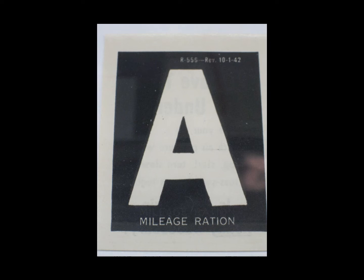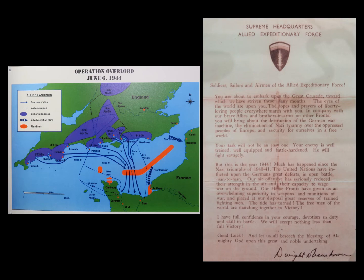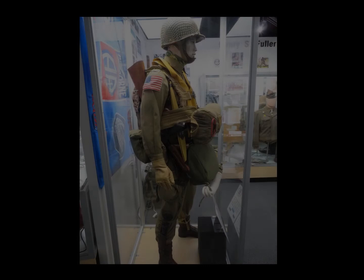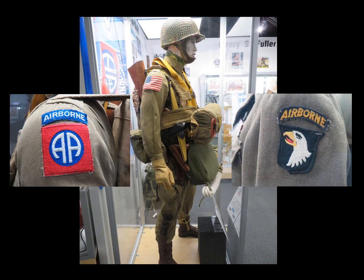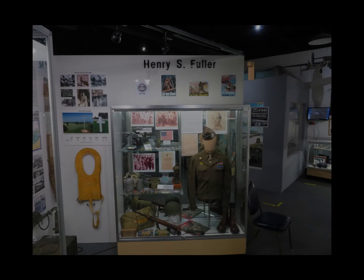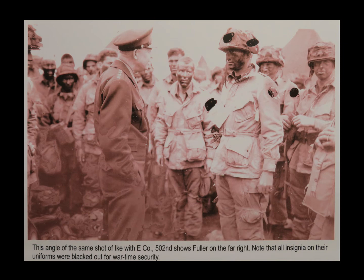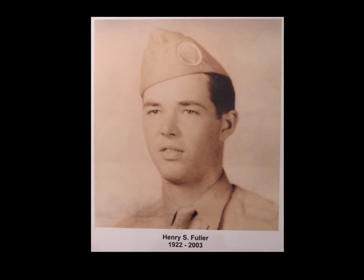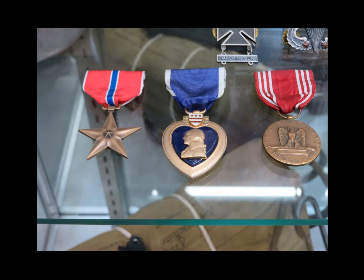On June 6, 1944, Allied forces went ashore on the beaches of Normandy. The night before the D-Day landings, Allied airborne forces from the American 82nd and 101st Airborne Divisions and the British 6th Airborne Division parachuted into the Normandy area to hold key road junctions in preparation for the invasion. One of the young paratroopers that jumped into Normandy that night with the 101st Airborne Division was Henry S. Fuller from Akron, Ohio. Fuller was photographed as part of a group of young paratroopers listening to General Dwight Eisenhower prior to loading on their aircraft. Three months after D-Day, Fuller made a second combat jump as part of Operation Market Garden in the Netherlands. In January of 1945, Fuller was wounded when a large portion of the 101st was surrounded in the small village of Bastogne in what later became known as the Battle of the Bulge.